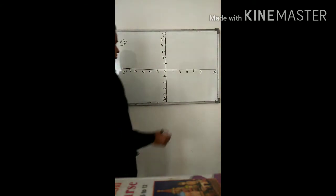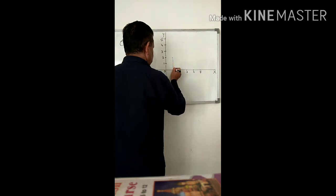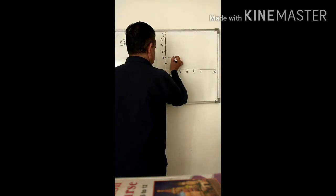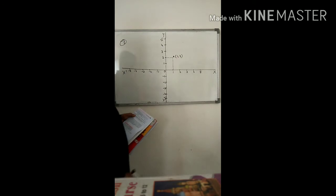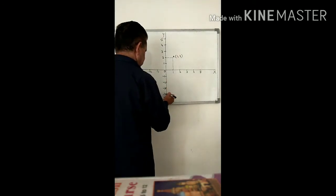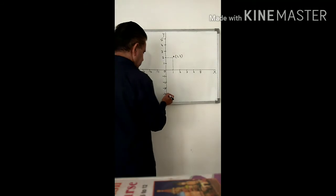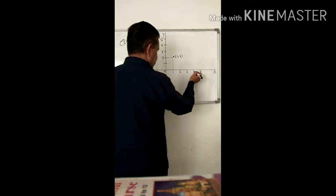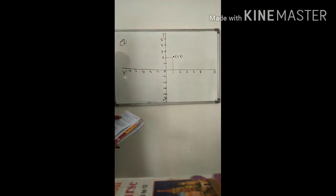First: A point. A equals (1, 2). Second: B equals (minus 4, 2). Minus 4 and 2 — x equal to minus 4 and y equal to 2.